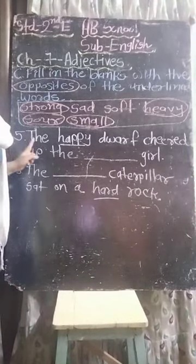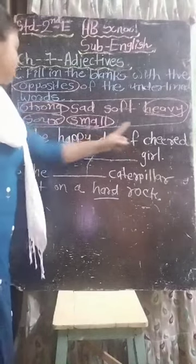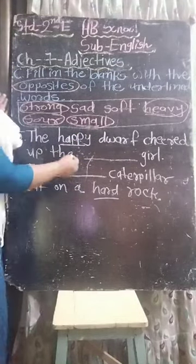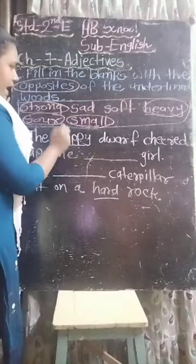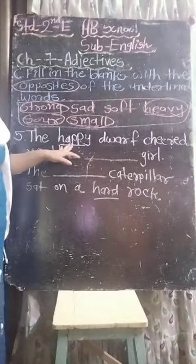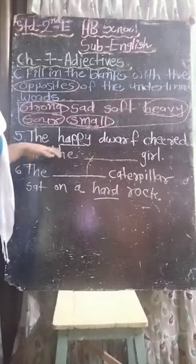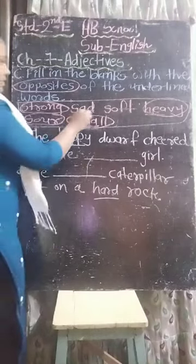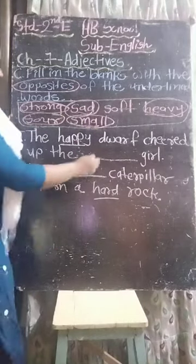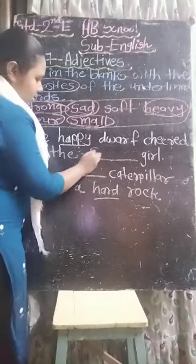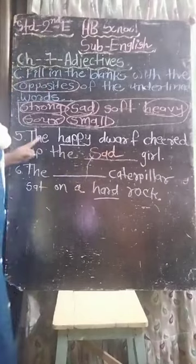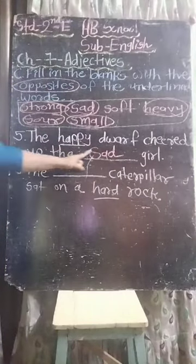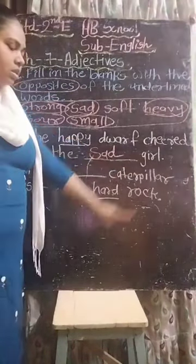Fifth one: the happy dwarf cheered up the dash girl. The underlined word is happy. Happy's opposite word is sad. Write down here: sad. The happy dwarf cheered up the sad girl.